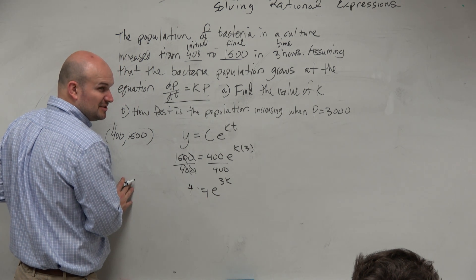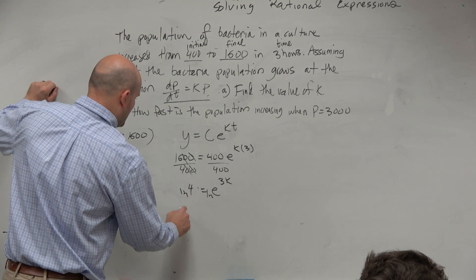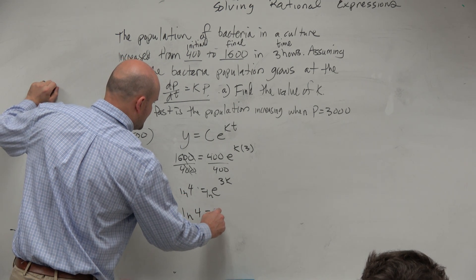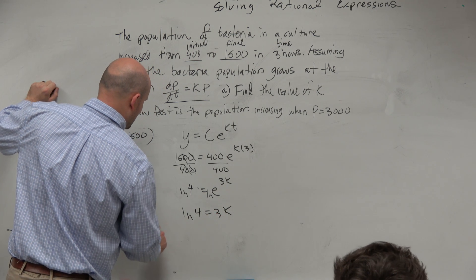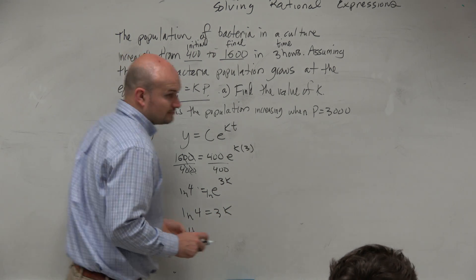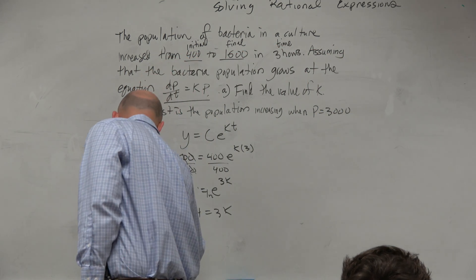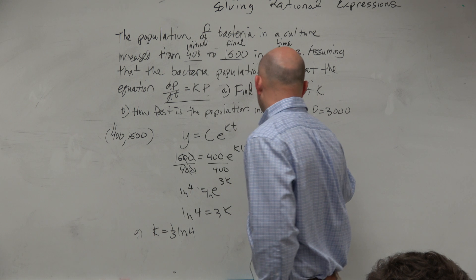What do we want to do on both sides? ln. ln. So therefore, we have the ln of 4 is equal to 3k. Could we not say that k is equal to one-third ln of 4? Yes. Part A, right? Good multiple choice question? I think so.